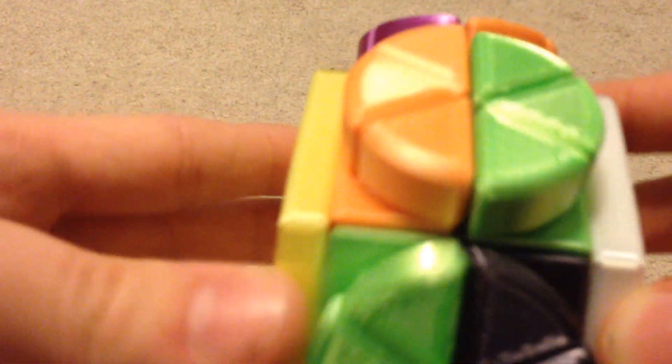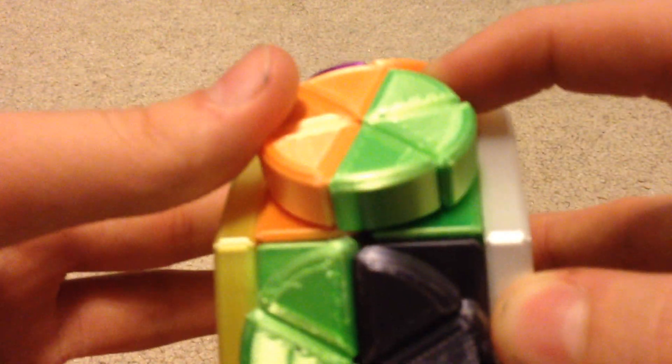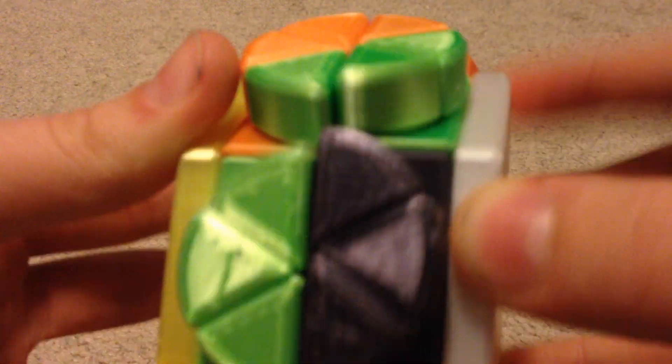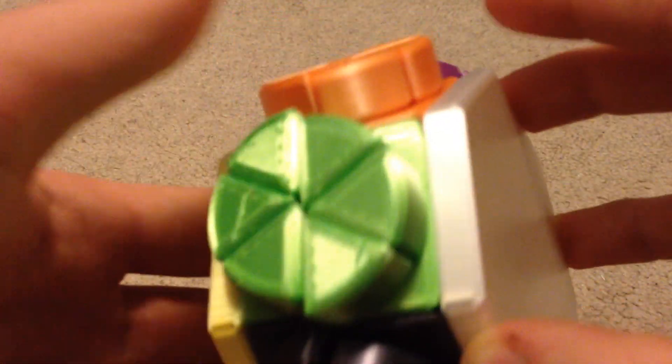So how you scramble it is all these little wedge pieces can all interchange with each other. So you can do that. It's pretty easy to solve. It's a nice, fun little puzzle to solve.